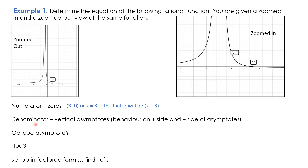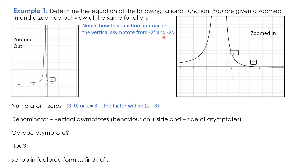The denominator we figure out by looking at the vertical asymptote. Look at the behavior on the right side and on the left side of the vertical asymptote at negative 2. Notice how the function approaches that vertical asymptote from the left and from the right — they have the same behavior, both going to positive infinity on either side of the asymptote. That means our denominator is going to be (x + 2) squared — it's like a bounce asymptote, because both ends of the function are moving in the same direction.